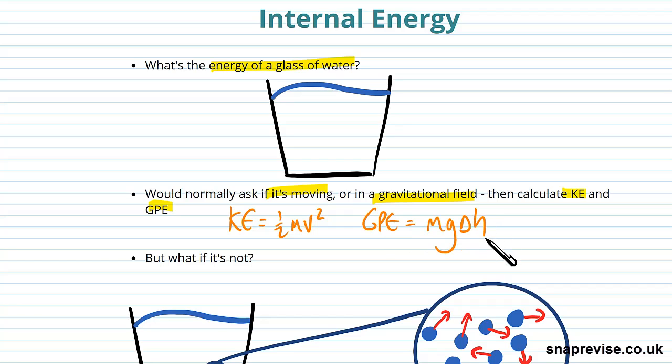But what if neither of those things have happened? What if we're just sitting on the ground, and we're not in a gravitational field at all, and we're not moving, the glass of water is stationary, just sitting on a table - does the glass of water have no energy? And so far we'd probably say yes, because that's the only kind of energy we talk about.